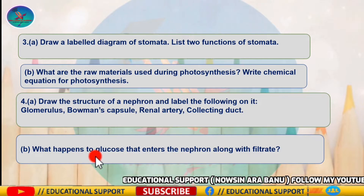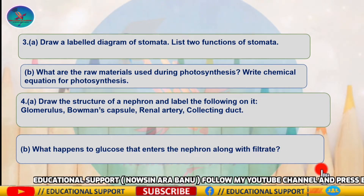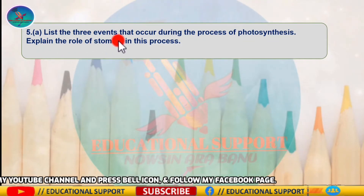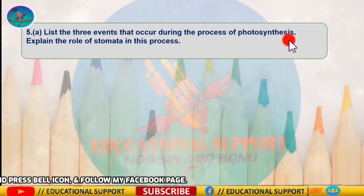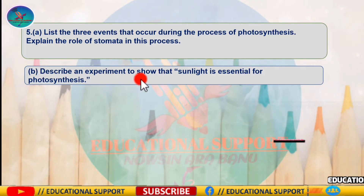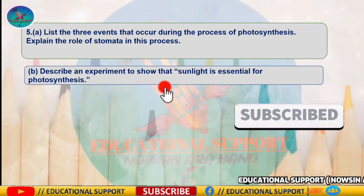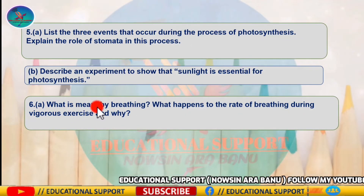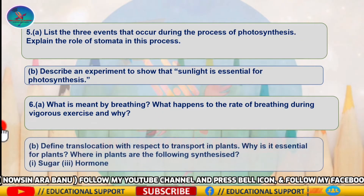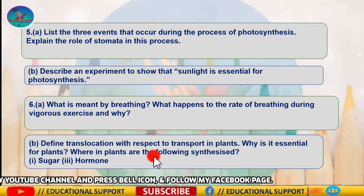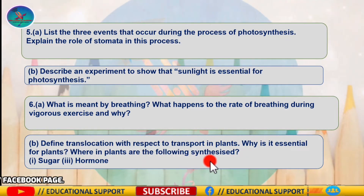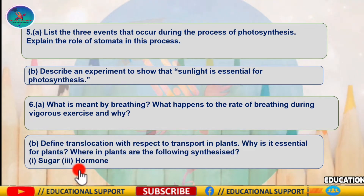Question four B: what happens to glucose that enters the nephron along with the filtrate? Question five A: list the three events that occur during the process of photosynthesis and explain the role of stomata in this process. Question five B: describe an experiment to show that sunlight is essential for photosynthesis. Question six A: what is meant by breathing? What happens to the rate of breathing during vigorous exercise and why? Question six B: define translocation with respect to transport in plants and why is it essential — considering plants synthesize sugar and hormones.